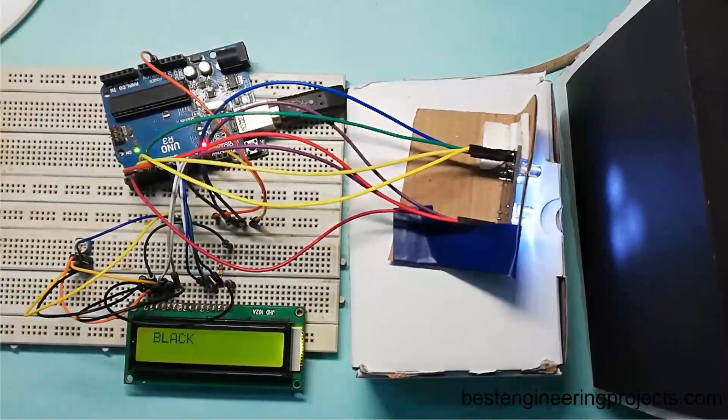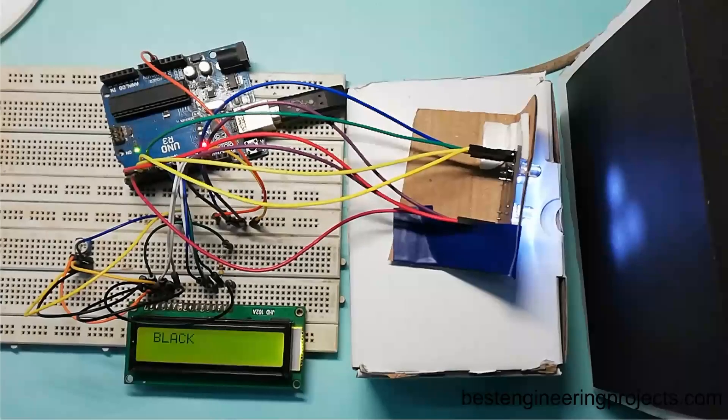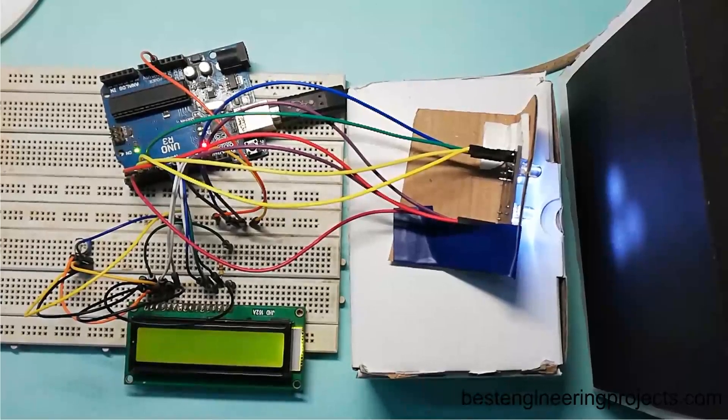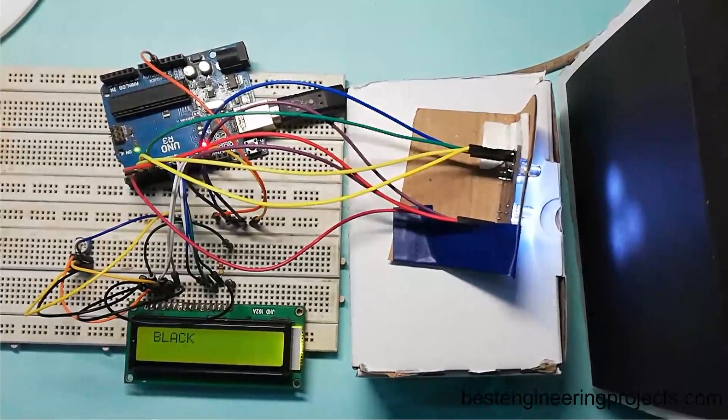After assembling all the components as shown in the circuit diagram, now it's time to download the software code. Download the software code from the link given in the description section and open it in your Arduino IDE.